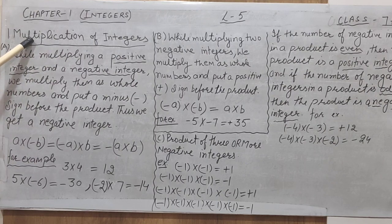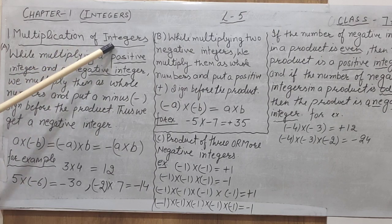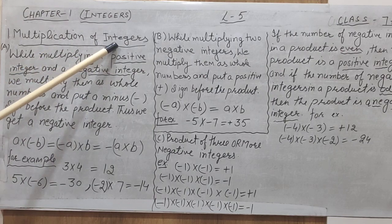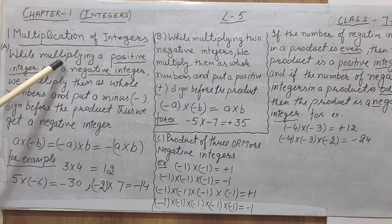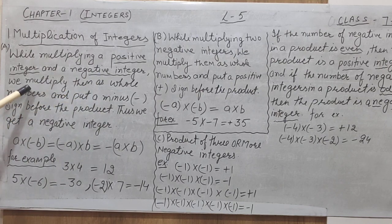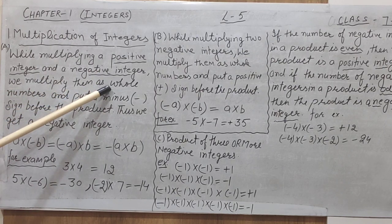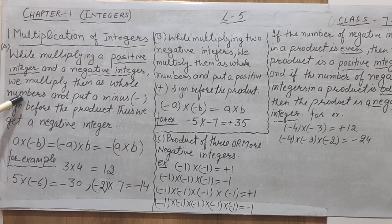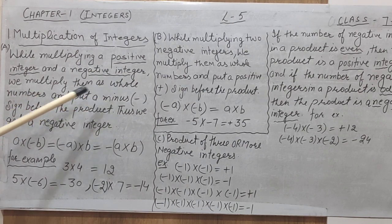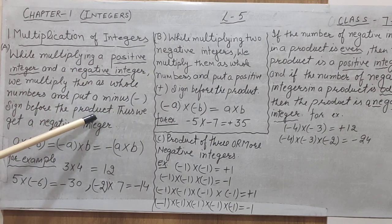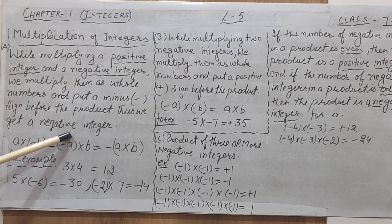Next, let's move towards the multiplication of integers and its properties — how we can multiply integers: positive integers, negative integers, or one positive and one negative. While multiplying a positive integer and a negative integer, we multiply them as whole numbers and put a minus sign before the product. Thus, we get a negative integer.